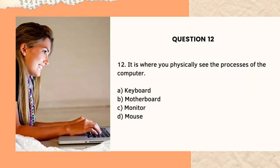Question number twelve: It is where you physically see the processes of the computer. A, Keyboard; B, Motherboard; C, Monitor; D, Mouse. The answer is letter C, Monitor — it's where you can see everything physically.